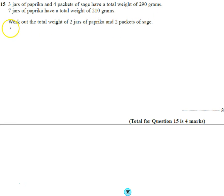Okay, so there's lots of information. Let's start with 3 paprika—oops—3 paprika plus 4 sage, that equals 290 grams.